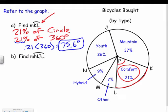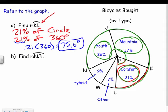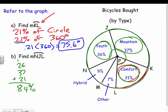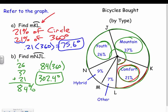I can do the same thing for arc NJL — just follow the arc from N to J to L, which covers 26 percent, 37 percent, and 21 percent combined. Adding those together gives 84 percent of the circle — I really could have just taken 100 minus 16 percent. So 84 percent of 360 is 0.84 times 360, which gives 302.4 degrees. It should make sense — it's almost the whole circle, so around 300 degrees is right. If you're getting answers bigger than 360, you know you did something wrong.